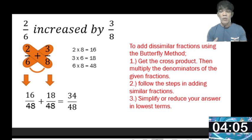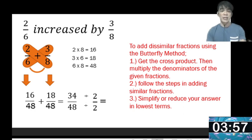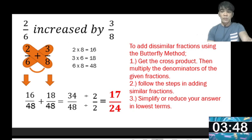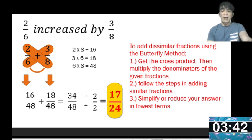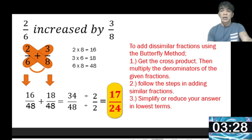We need to get the GCF of 34 and 48. The GCF is 2. Divide both by 2: 34 divided by 2 is 17, and 48 divided by 2 is 24. So our final answer is 17 over 24. Look at the numerator 17 and denominator 24 — there is no common factor between them except 1, so 17 over 24 is already in lowest terms.